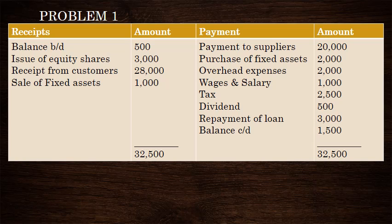The cash account has an opening balance from the balance sheet — the opening and closing balance in the cash flow statement. There is an issue of equity shares, and the cash flow from investing and financing activities. Then, the receipts from customers — cash received from customers.